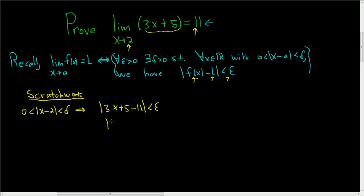So this is the same as 3x minus 6, smaller than epsilon. This is the same as 3 times x minus 2, smaller than epsilon. Then we can divide by 3, so we end up with x minus 2 smaller than epsilon over 3. So that is going to be our delta in the proof.